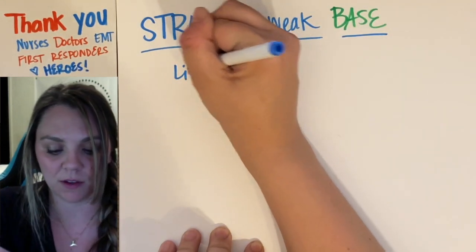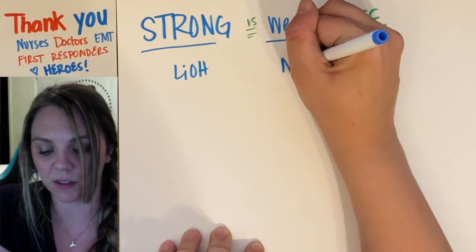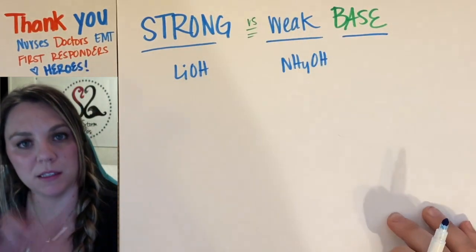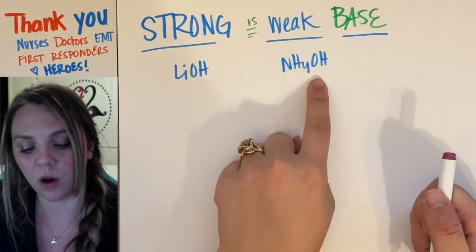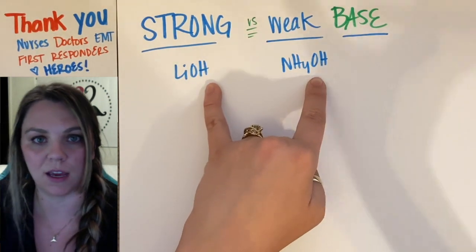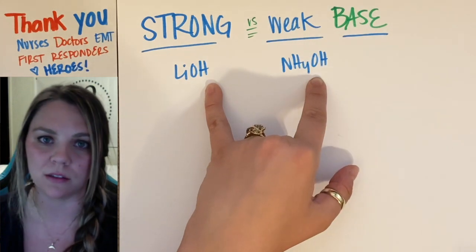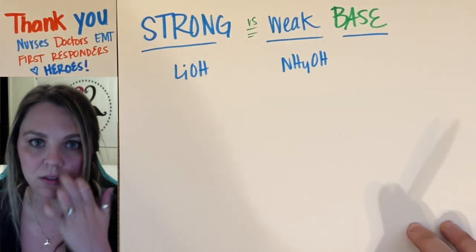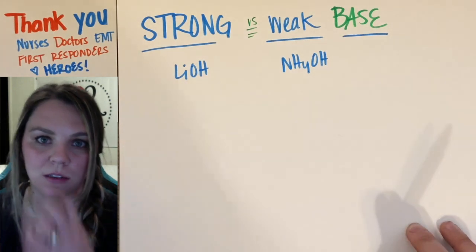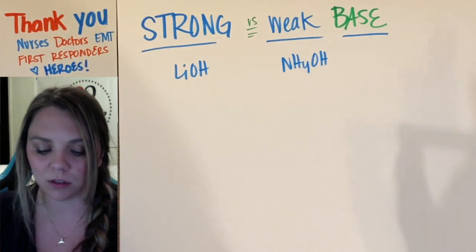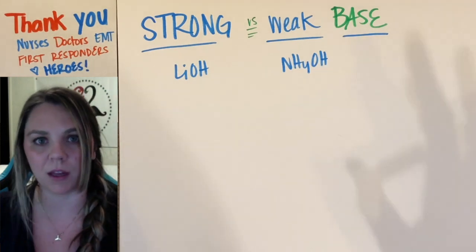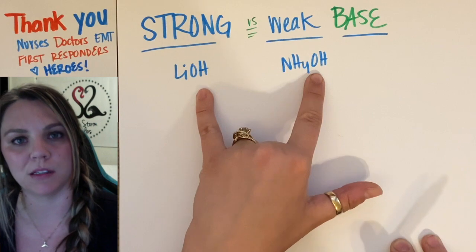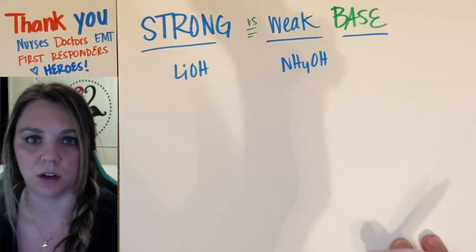So you have LiOH versus NH4OH. Bases typically will have this OH — your hydroxide — as your anion, not always. There are definitely some bases that don't have OH at the end, like ammonia. But in general, for about 95% of the time, your bases will have an OH as your anion.